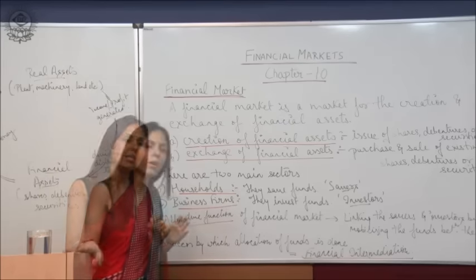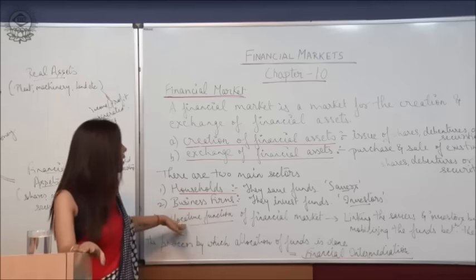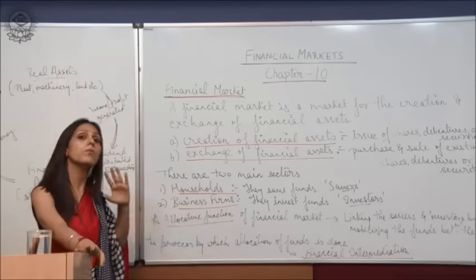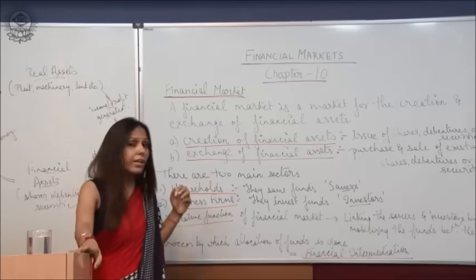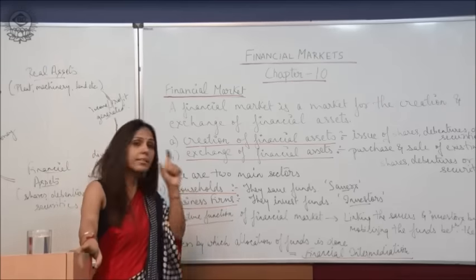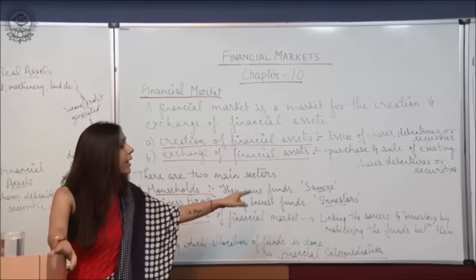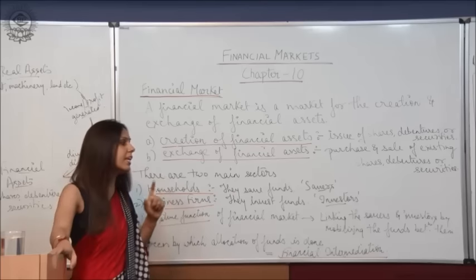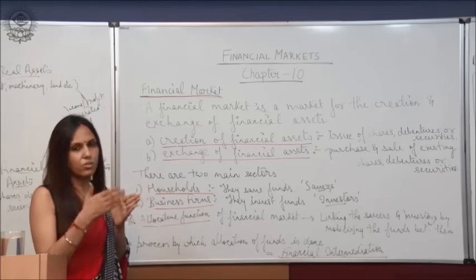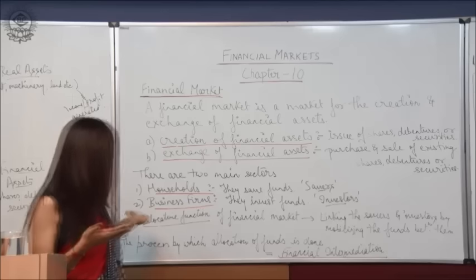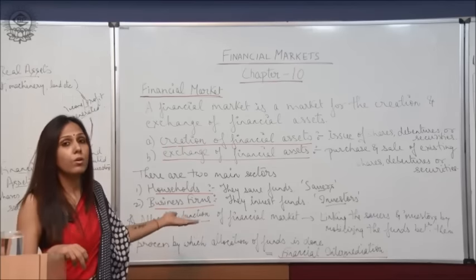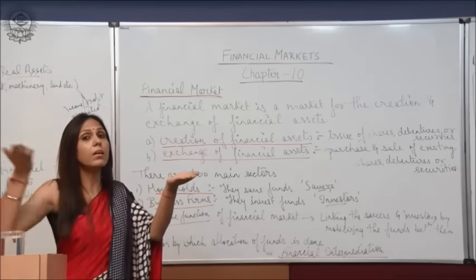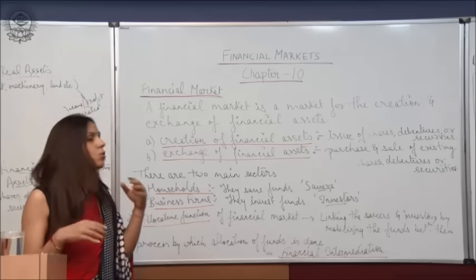Financial market has a primary function called the allocative function. Allocative function means that this financial market links the savers and the investors by mobilizing the funds between them. So this financial market plays an allocative function by bringing together the savers and the investors to mobilize funds.